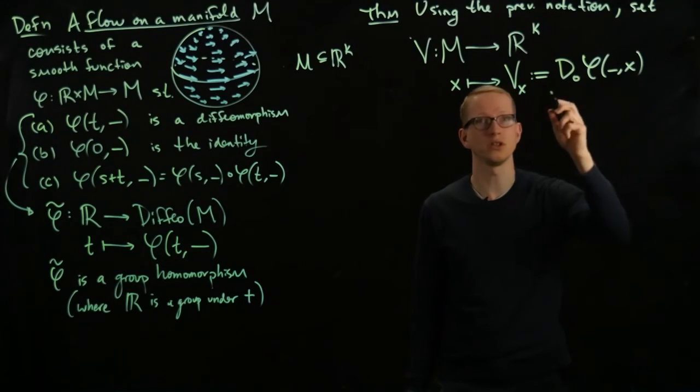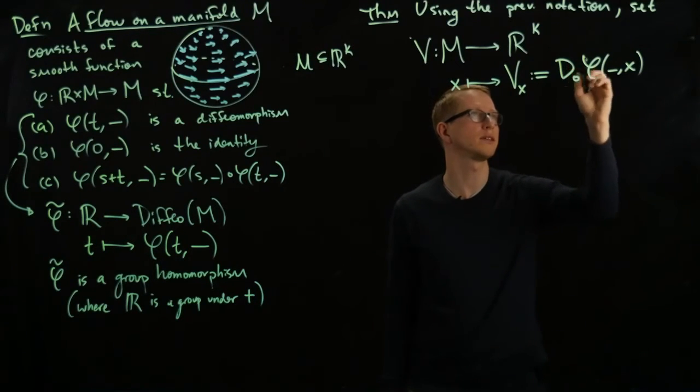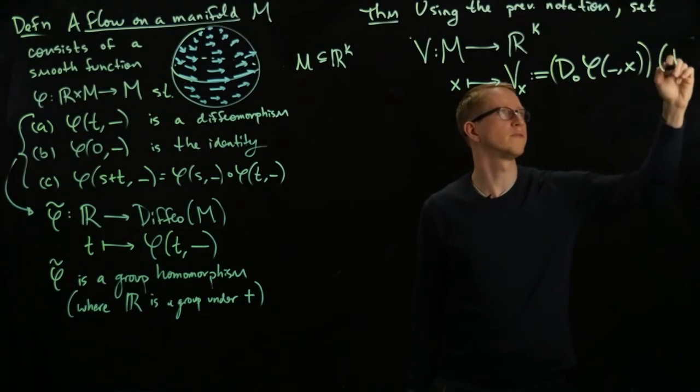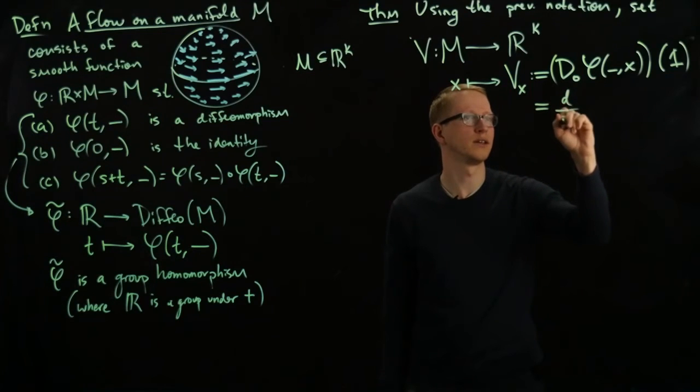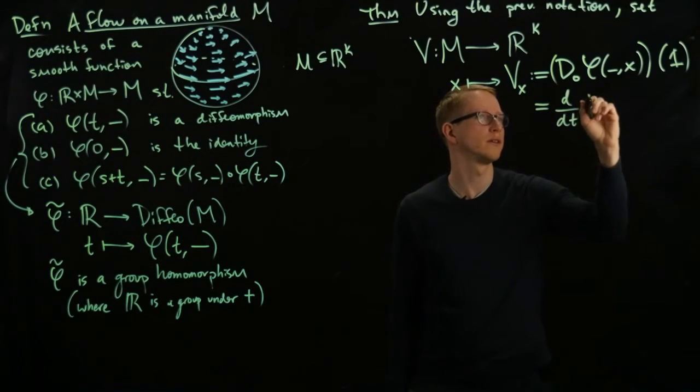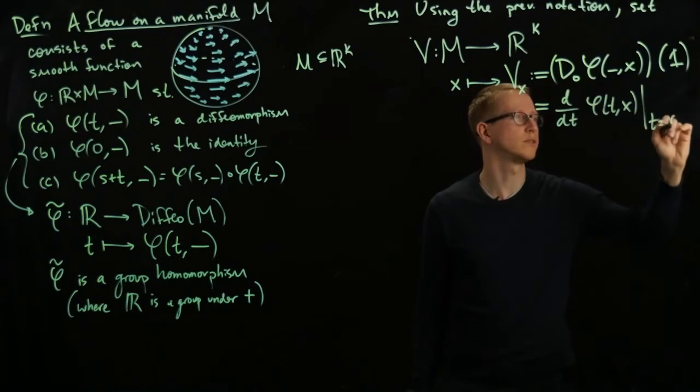And this will give me just a vector if I just take its derivative. So let me write this. Technically, I mean, because this is a differential, I apply the vector one at zero, but I can also equivalently write this as d/dt φ(t,x), and then evaluate at t equals zero.